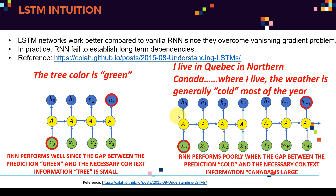However, consider another example: 'I live in Quebec in northern Canada, where I live the weather is generally...' — and we're looking for the word 'cold.' Here the RNN will perform poorly, because the gap between the prediction 'cold' and the necessary context 'Quebec' is much longer compared to 'green' and 'tree.' The performance of a basic vanilla RNN degrades significantly with longer dependencies, and that's why we introduce LSTM.